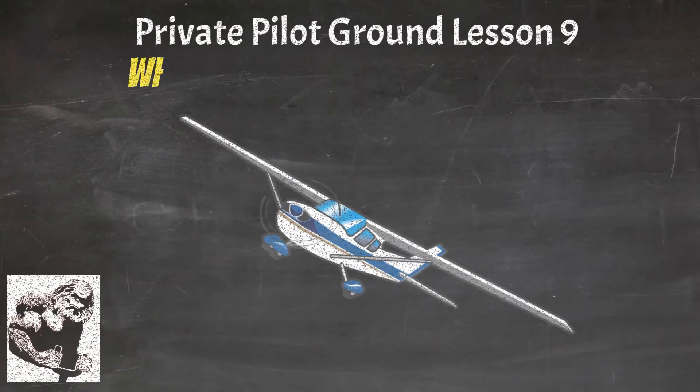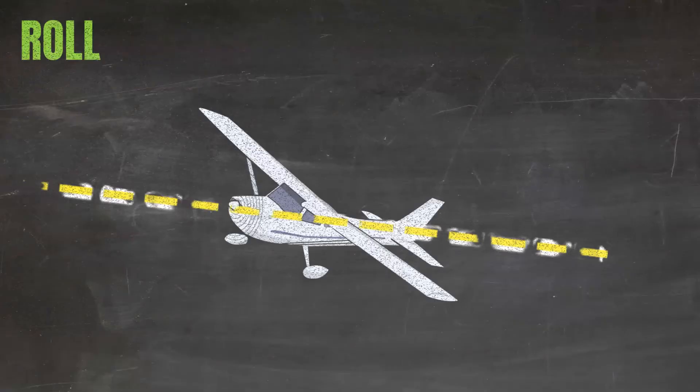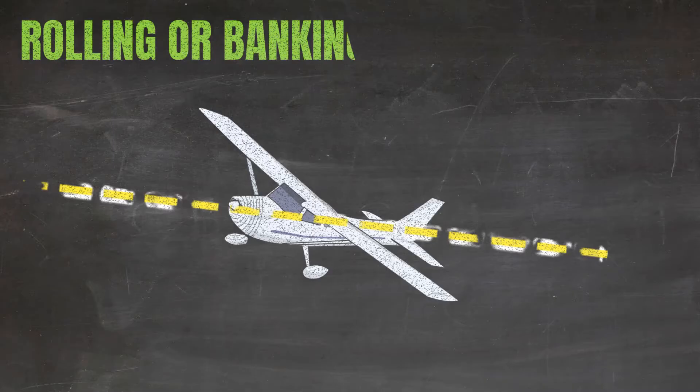Welcome to Ground Lesson 9. Today we'll talk about what makes an airplane turn. As you're probably already aware, we turn the airplane by rolling or banking it on the longitudinal axis.